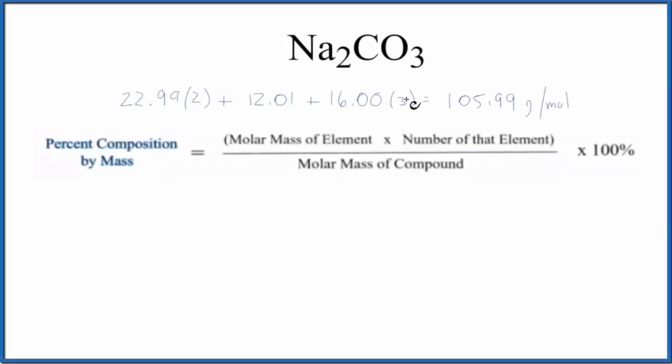In this video we'll find the percent composition by mass for each element in Na2CO3. This is sodium carbonate. So we have this equation here and the first thing we need to figure out is the molar mass of the compound. That's the Na2CO3.